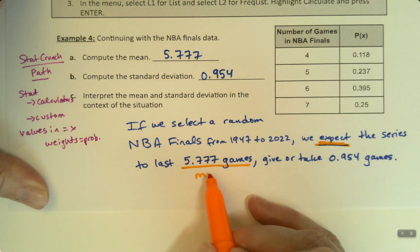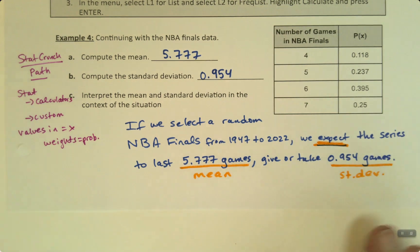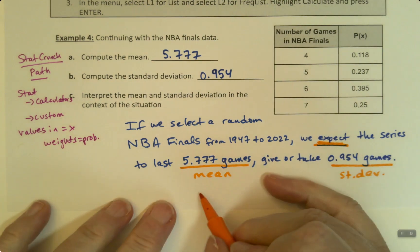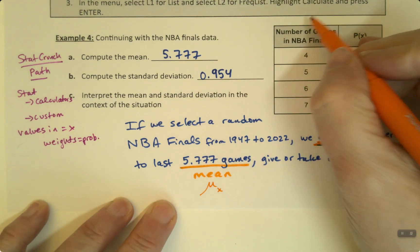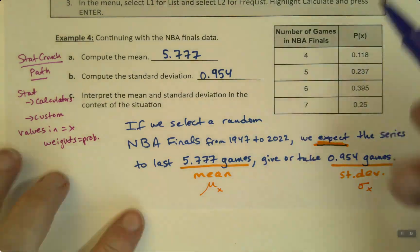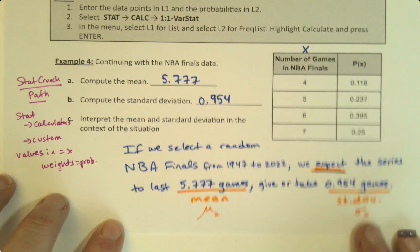Over here we have the mean, and then we have give or take, and the standard deviation. We learned that back in Section 3.2. This is the mu, the mean, this is the sigma, and x is just number of games. So this value right here is your x, and this is your probability of x. Those are your values.